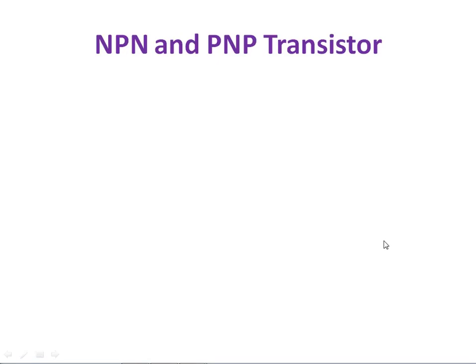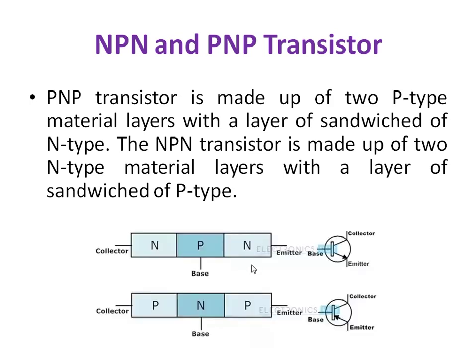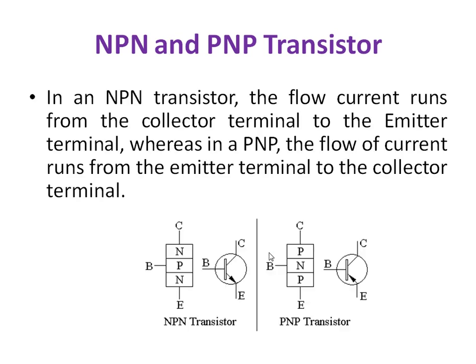Let us compare NPN and PNP transistors. In an NPN transistor, the current is flowing from collector to emitter, that's why the arrow is pointing in the outward direction. But in a PNP transistor, the current is flowing from emitter to collector, and the arrow indicates the current flowing from the emitter terminal to the collector terminal.